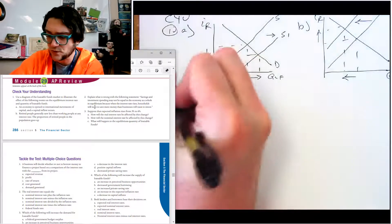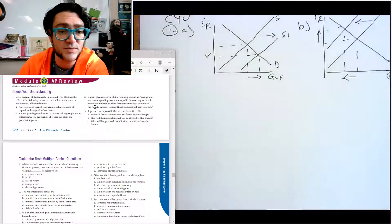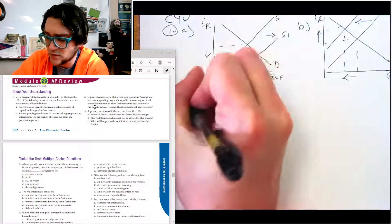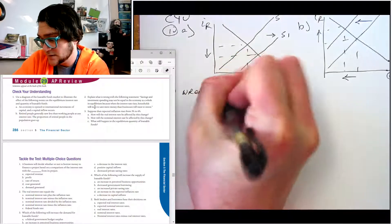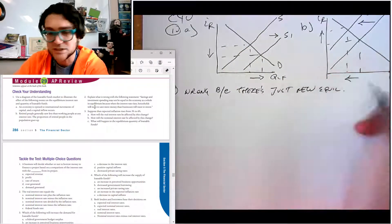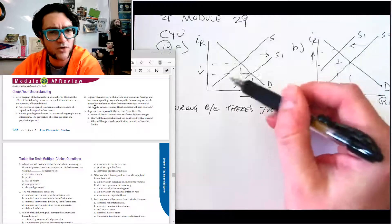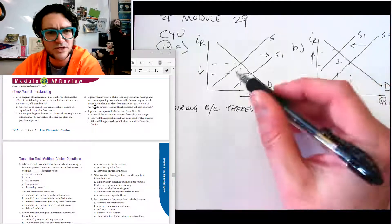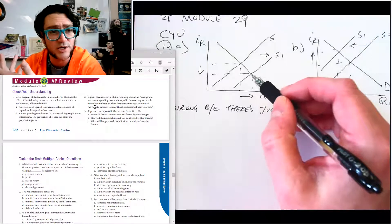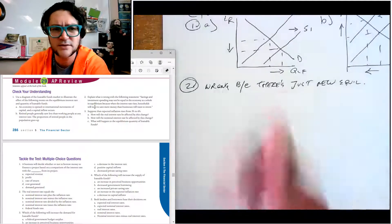Question number two says explain what's wrong with the following statement: Savings and investment spending may not be equal in the economy as a whole, and equilibrium is when the interest rate rises, households want to save more money than businesses will want to invest. That doesn't make any sense. Wrong because there's just a new equilibrium. Households want to save more money than businesses want to invest - that's not really true, because when that happens the interest rate just goes down and the quantity demanded of money from the loanable funds market increases. So you just get a new quantity. Don't say those silly things.